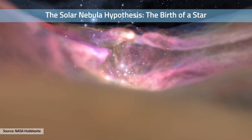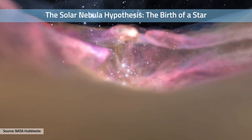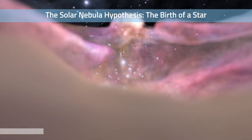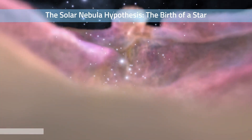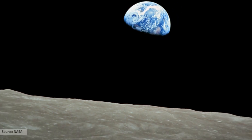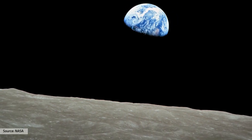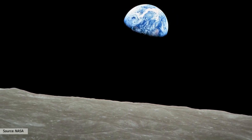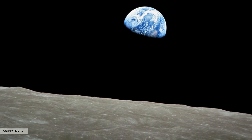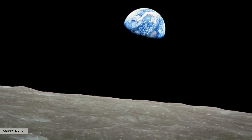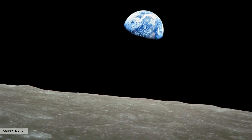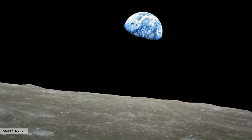The death of stars, especially the big ones, can produce so much energy to allow the production of heavier elements in the periodic table. The Earth also started from the collection of dust and other particles drifting in space for some time. As it grew larger, it gained enough mass to pull smaller particles into it.